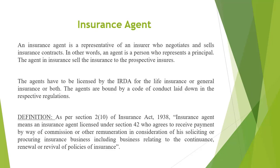Now we will understand the meaning of insurance agent. An insurance agent is a representative who negotiates and sells insurance contracts on behalf of the insurance company. We can say the insurance agent is the person who represents the principal in front of the third party. Here, the principal is the insurance company and the third party is the insured, or the policy holder. So the insurance agent brings together the principal and the third party.